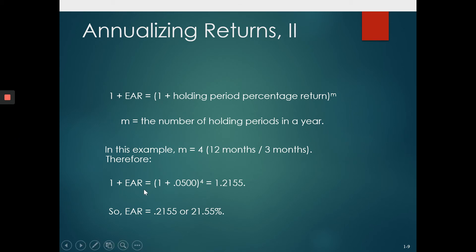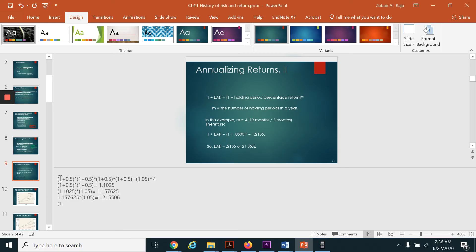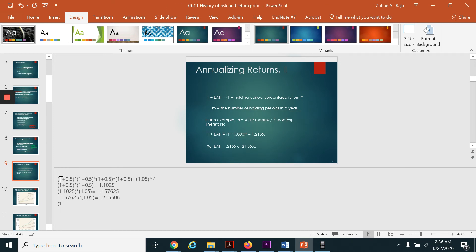What does effective annual return actually mean? The effective annual return means that rather than just holding it for three months, if you would have held it for the whole year, what return would you actually have earned — assuming you kept earning that five percent after every three months? The formula can be rewritten as (1 + 0.05) raised to the power four.